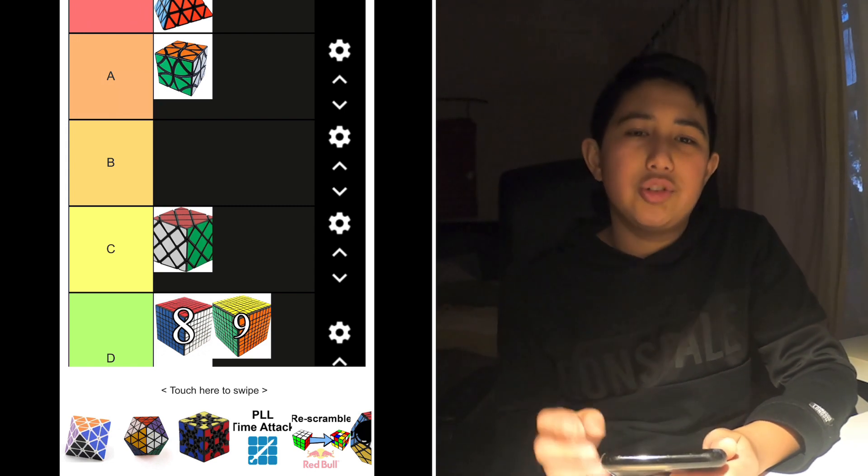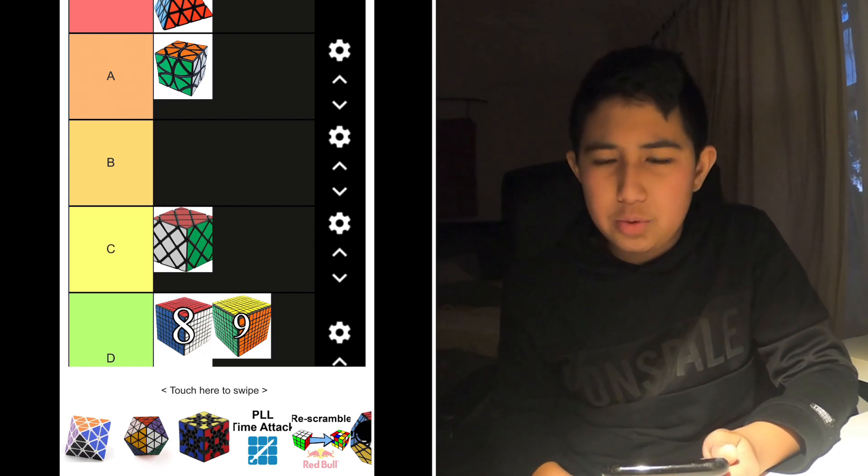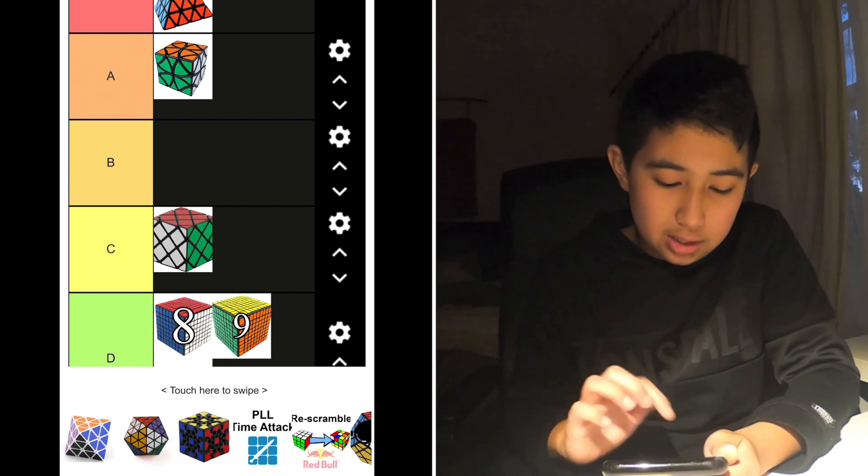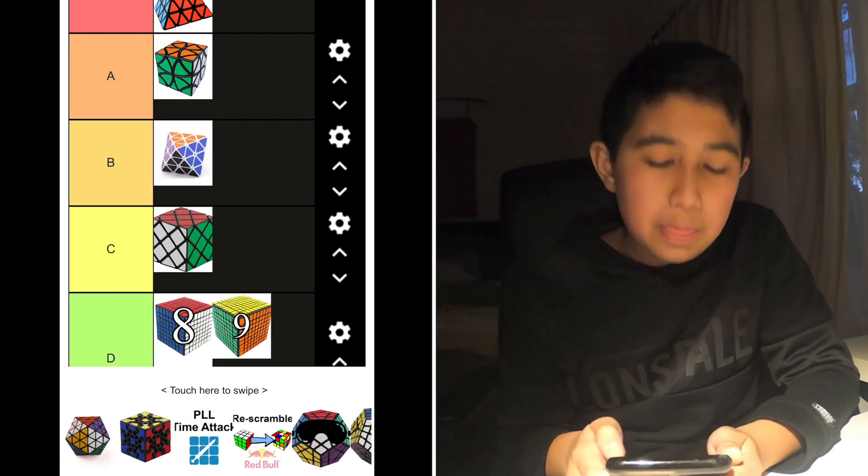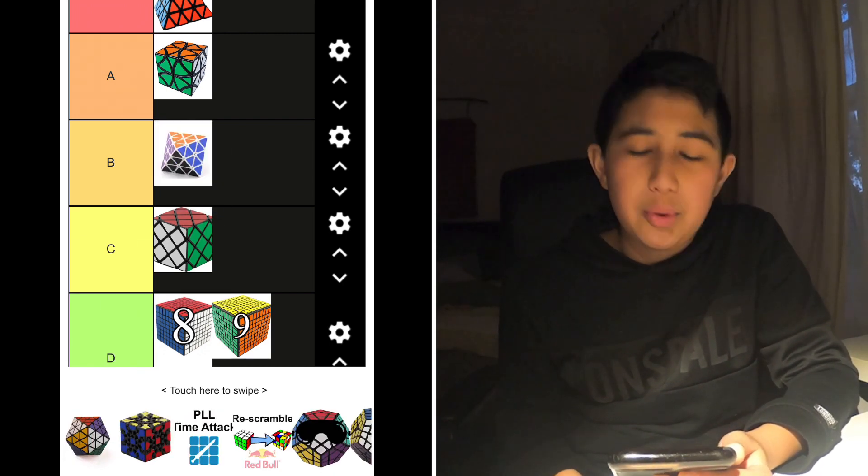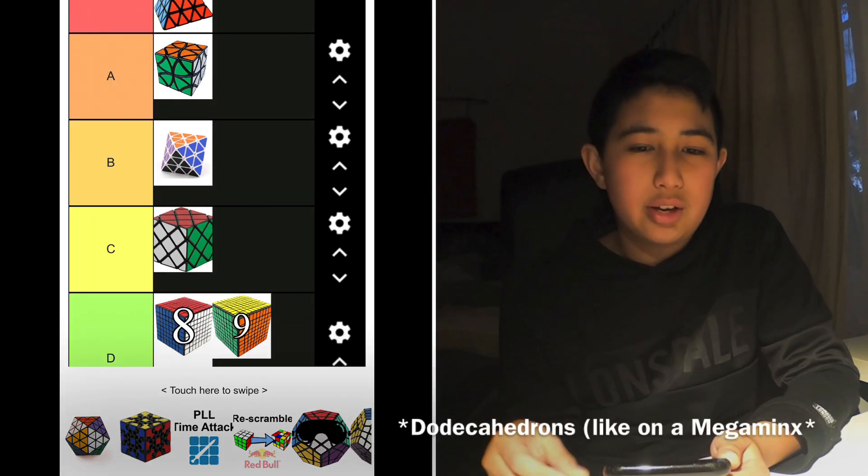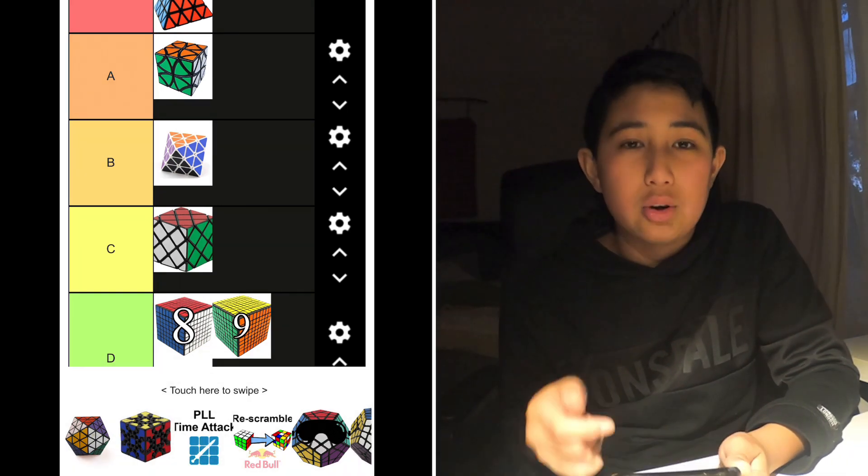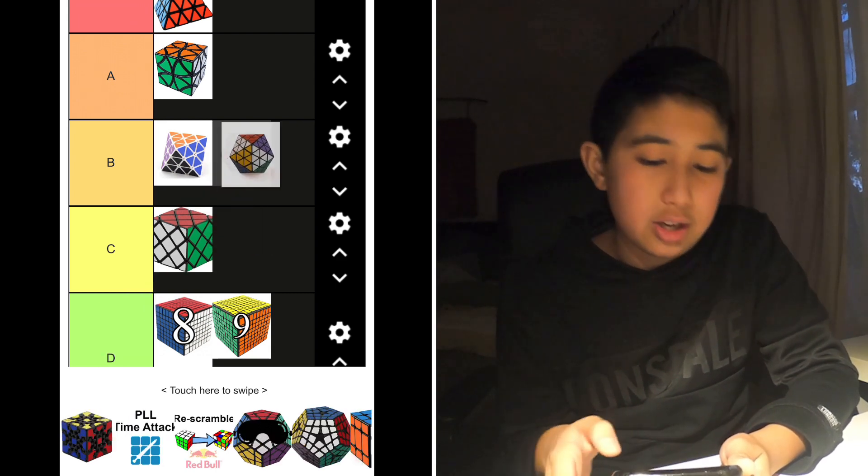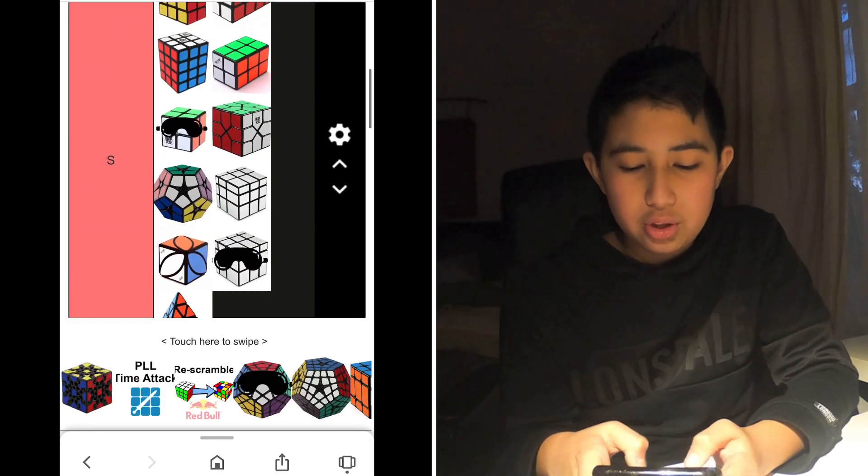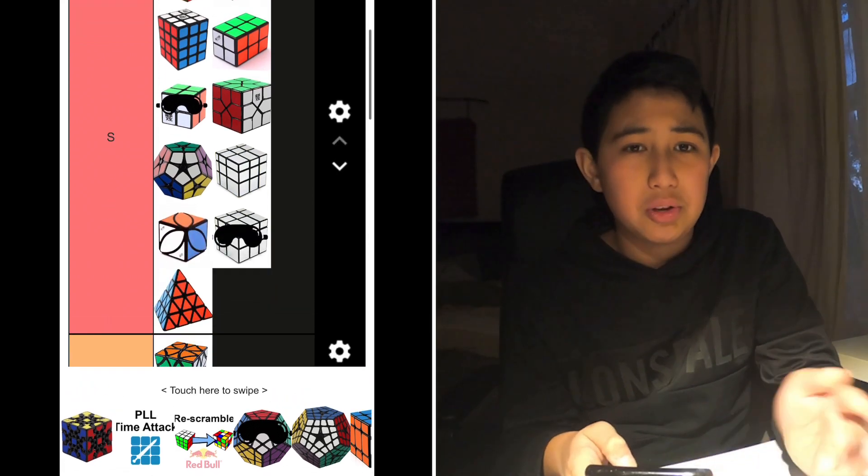This thing, face-turning octahedron. I believe it's a cube shape mod, but nevertheless it is a pretty cool puzzle, and it also brings different shapes into the WCA. We only have stuff like cubes, tetrahedrons, and icosahedrons. It would be cool to have octahedrons. And in fact, this icosahedron here, that's why I'm putting all these cuboids in S tier as well, because they're all like different sizes of cuboids.